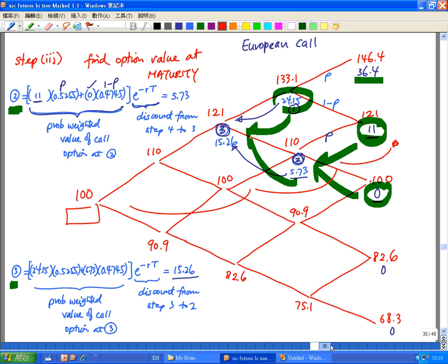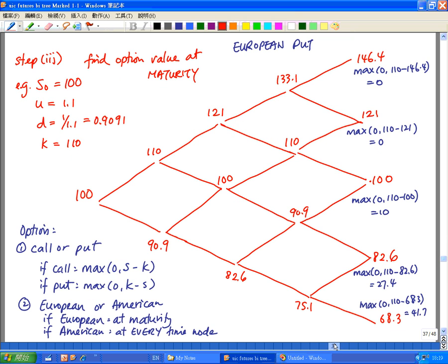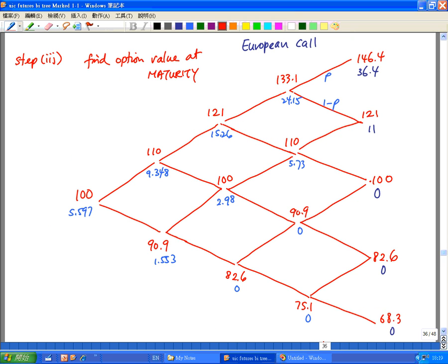And that is the amount, the value of the European call. This is a completed version of the earlier example. So here we have 24.15 we did earlier, which is our 1. 5.73 is our 2. This is our 3. The other values are doing the same process, and I end up with all these various numbers.